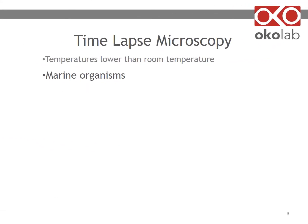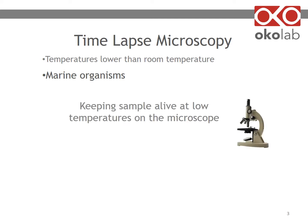You may have to maintain your sample at temperatures lower than room temperature, which is typically 23 celsius. For example, your sample may be a marine organism normally found in the ocean at 15 or 18 celsius. You need to recreate the lower temperature environment on the microscope and still provide humidity and gas of specific concentration.